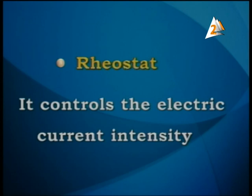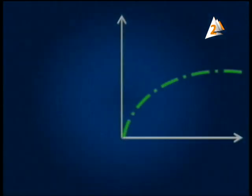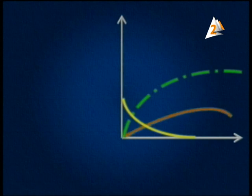The rheostat is used for increasing or decreasing electric current intensity in the device — for example, controlling the volume of a recorder. We also have a graph here, and it is very important — a graph about the chemical reaction.